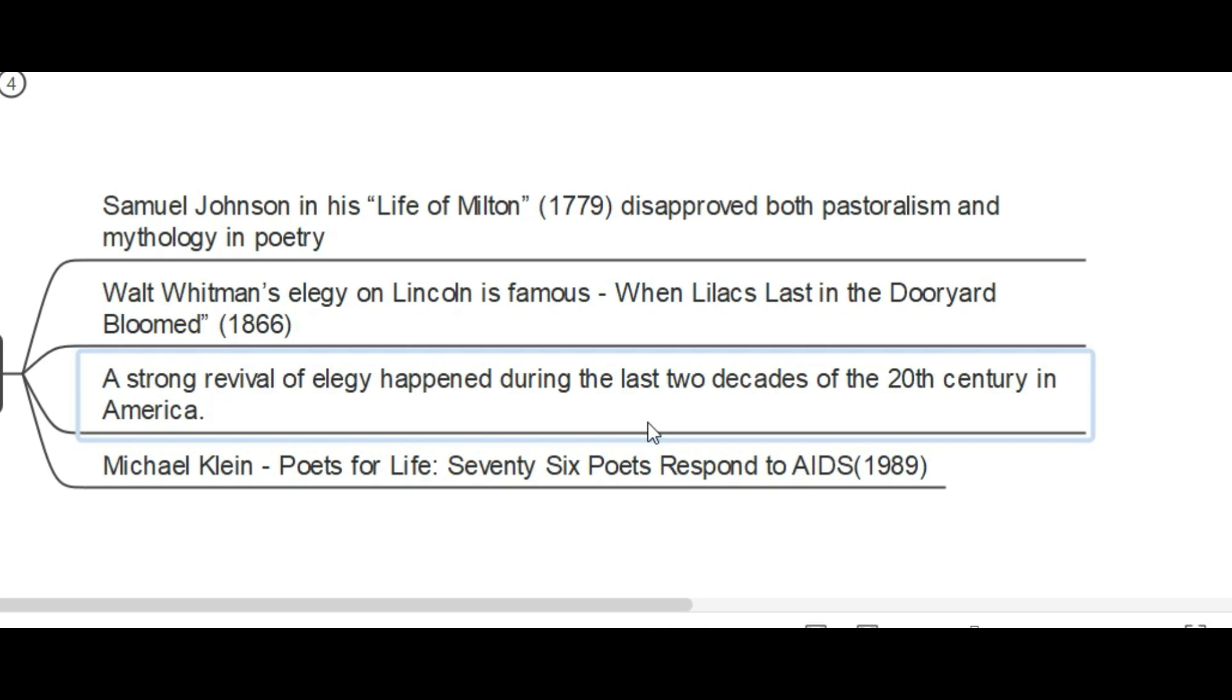And another thing is that elegy, after a kind of decadence, has a strong rebirth in the 20th century. And you can find the latest example in Michael Klein's Poets for Life, 76 Poets Respond to AIDS, published in 1989.